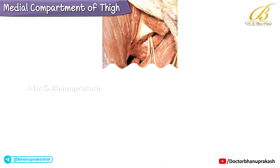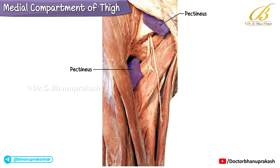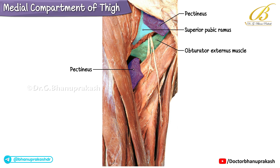Upon further dissection of the pectineus, the underlying obturator externus muscle is now exposed. The cut ends of the pectineus are visible, with the upper and lower ends clearly shown. Deep to the proximal cut end of the pectineus, a small portion of the superior pubic ramus of the hip bone can be appreciated.